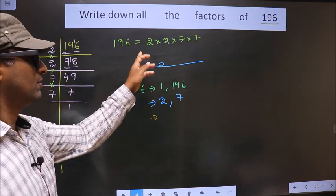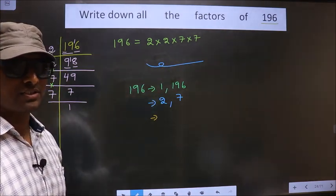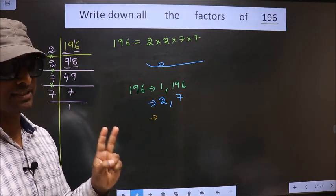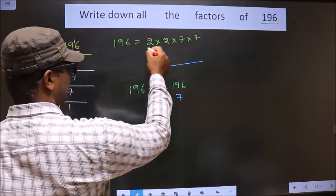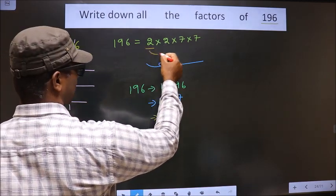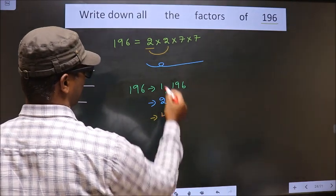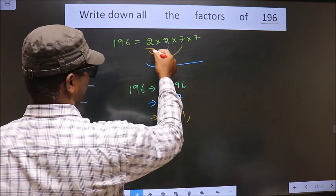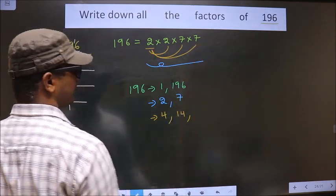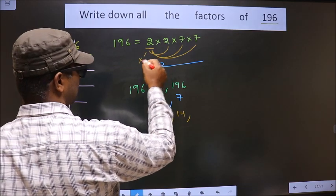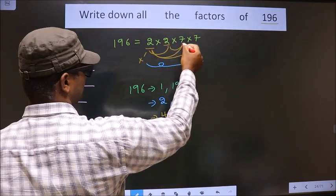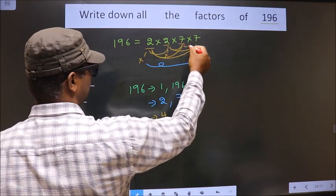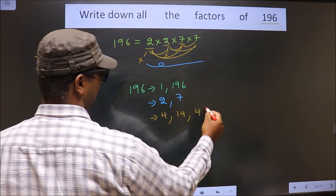Now from these numbers, now you should select a combination of two numbers. How do we select? First, I fix this 2. I combine with this 2, I get 4. Now I combine with the 7, I get 14. Now I combine with this 7, still I get 14. Now you leave this 2, take this 2, combine with 7, we get 14. Now you leave this 2, take this 7, combine with the 7. 7 into 7, we get 49.